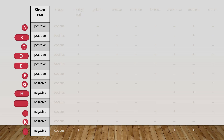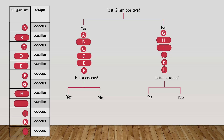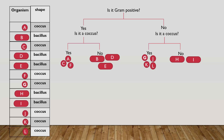Let's begin separating the 12 bacteria listed as A through L based on their gram reaction. I'm going to ask: is my bacteria gram positive? Yes or no. Notice I could also ask if it's gram negative and get the same result. Just by asking this question, I've separated the 12 bacteria into two smaller groups of 6 gram positive and 6 gram negative. Next, I can ask a question about shape. I've asked: is my bacterial unknown a coccus? Yes or no. This will further separate the bacteria into four smaller groups.